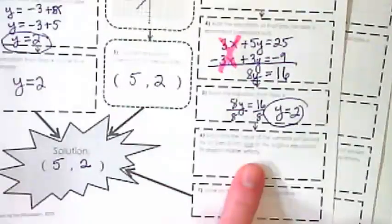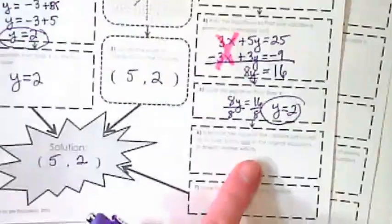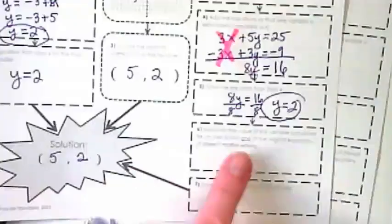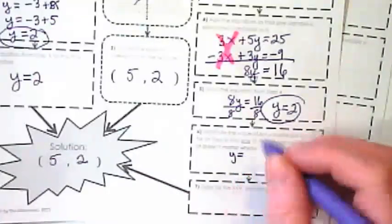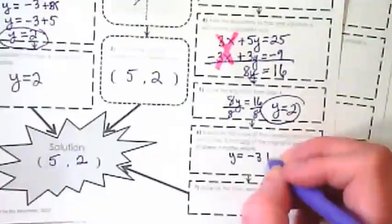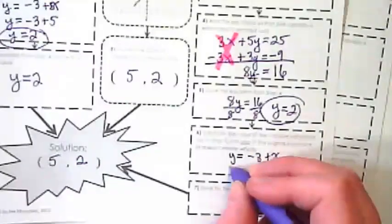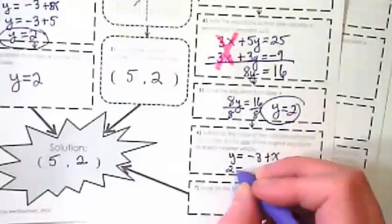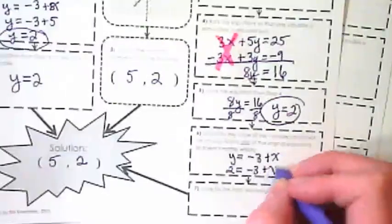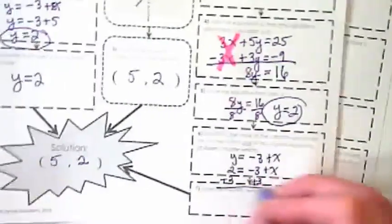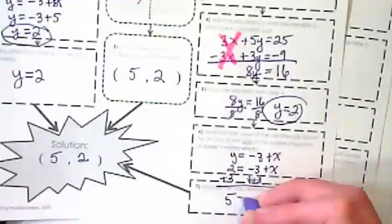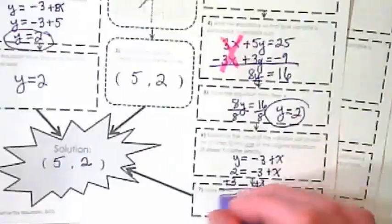Our next step is substitute the value of the variable just solved into one of the original equations. It doesn't matter which one. I always look for the one that's going to be the easiest to work with. And the first easy one was y equals negative 3 plus x. I'm going to rewrite that as 2 equals negative 3 plus x. We're going to add 3 to both sides. And we get 5 equals x.